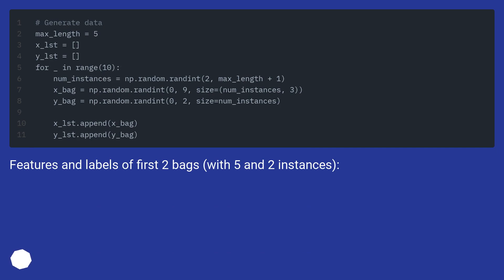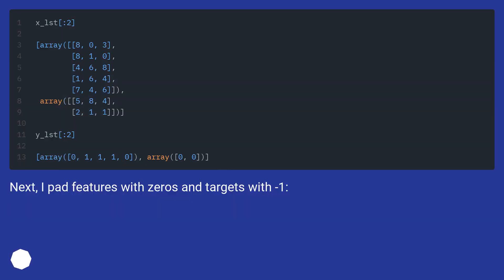Features and labels of the first two bags, with five and two instances. Next, pad features with zeros and targets with minus one.